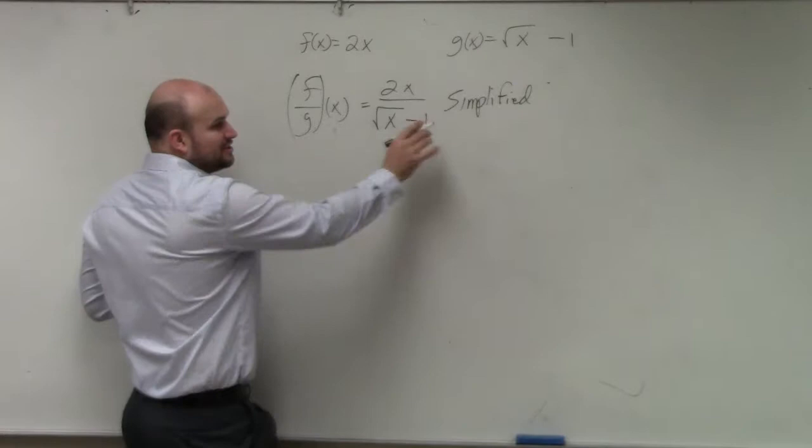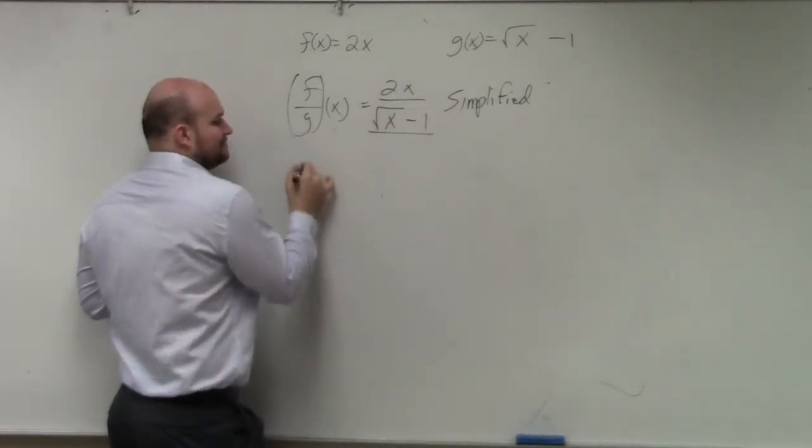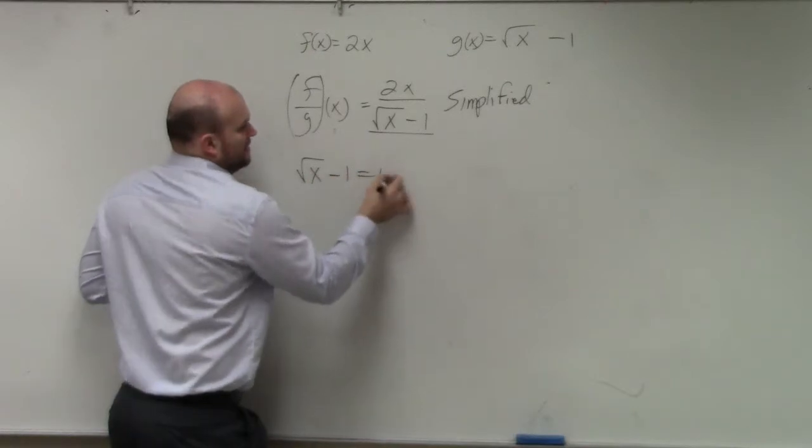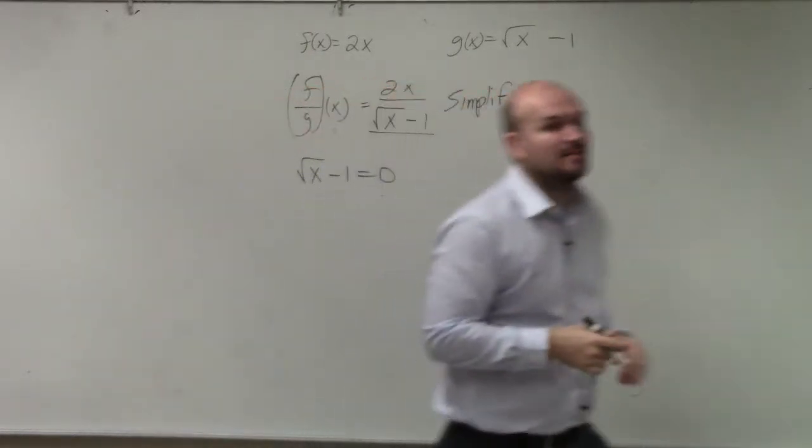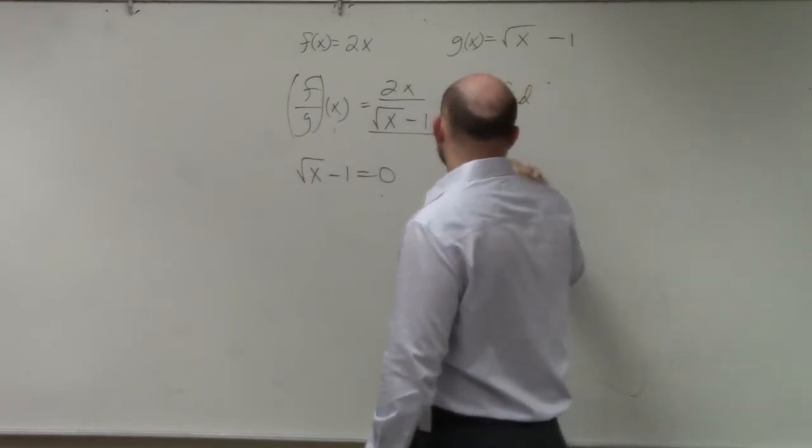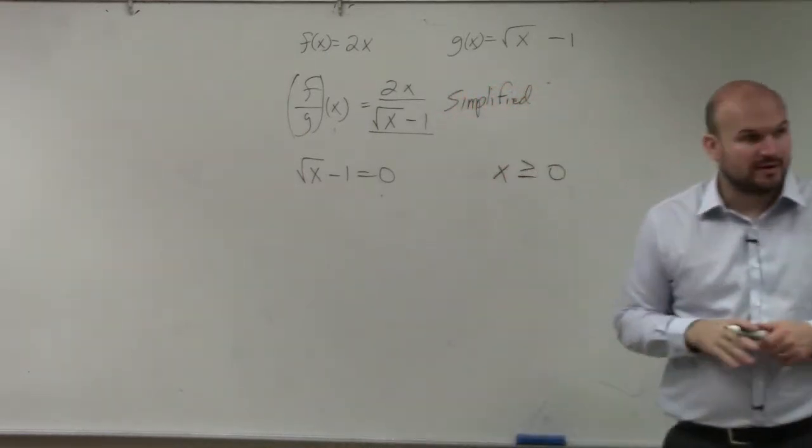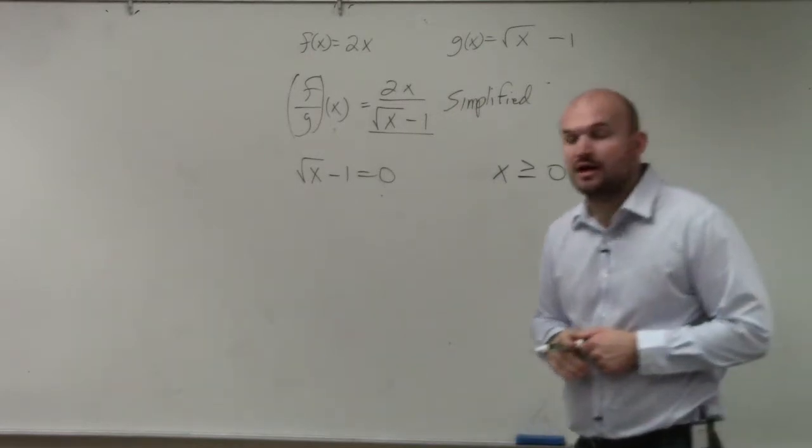So our two restrictions: our denominator, we set equal to 0 to find the restrictions of a denominator. And then we take our radicand, which is just x, and we set that greater than or equal to 0. That's the restrictions of our radical.